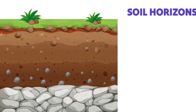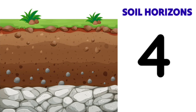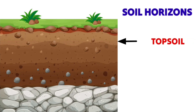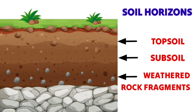Soil is also used to make roof tiles and bricks, which are then used in construction. The different layers of soil are called soil horizons. There are primarily four layers of soil: topsoil, subsoil, weathered rock fragments, and bedrock.